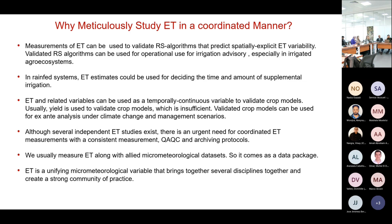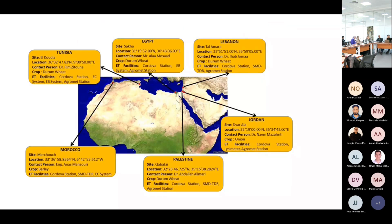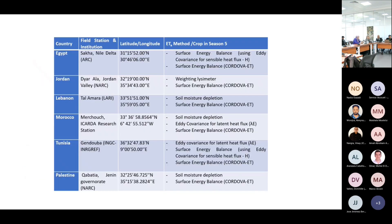The NENA-ETNET project brought us together in this context. We started with initially five sites and added two more. Palestine and Algeria were also interested in participating, but we didn't progress much with the Algeria site. Technically, we have six active sites in this network.